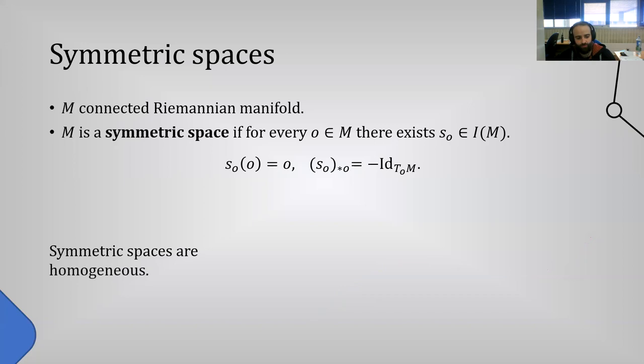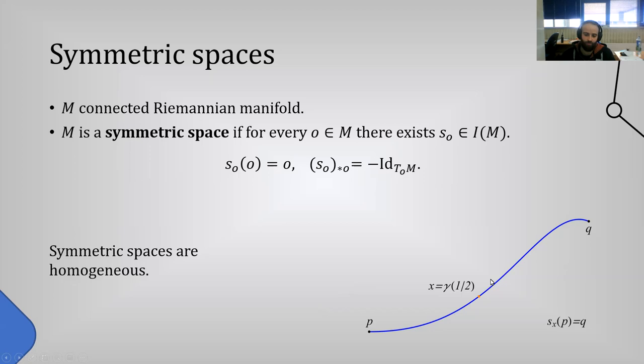Furthermore, we can show that symmetric spaces are homogeneous: if we have two points p and q, there is always an isometry sending p to q. To do this, simply take two points, connect them by a minimizing geodesic, and take the geodesic symmetry at the midpoint — it sends p to q. Our intention is to extract algebraic information from the symmetric space that is just enough to allow us to reconstruct the symmetric space from this data.